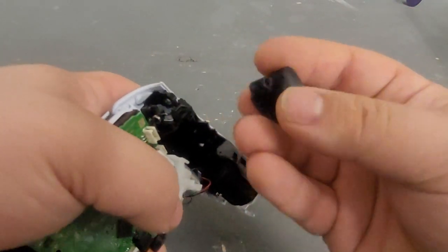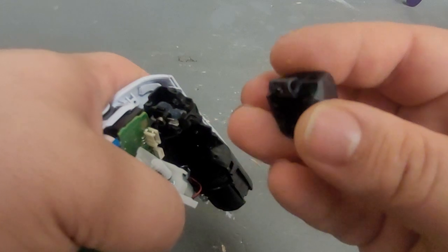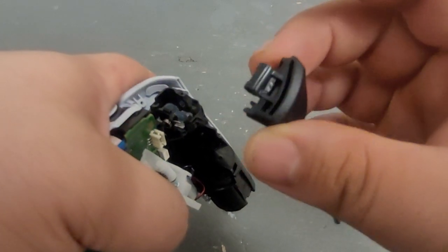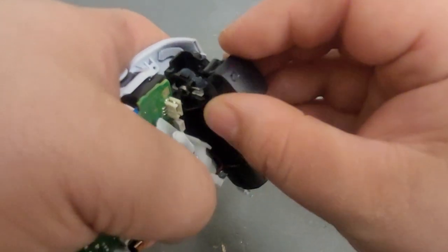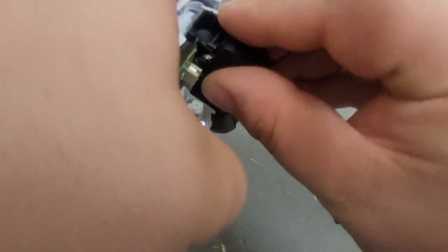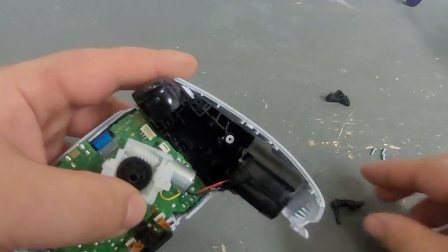When you're putting your trigger back on, you can see the spring there. There's a little notch. You want that to be over the spring.